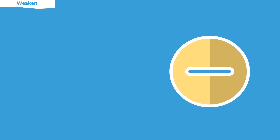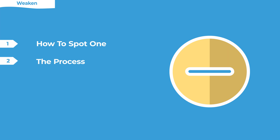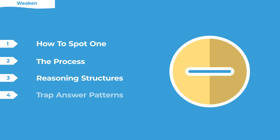In this lesson, we're going to look at four things: how to spot a weakened question, what the process is for approaching one, and during the course of that process there are a couple of steps that need further explanation. When we go to evaluate arguments, we're going to need reasoning structures — that's how the argument is built. And then we'll cover trap answer patterns for eliminating wrong answer choices.